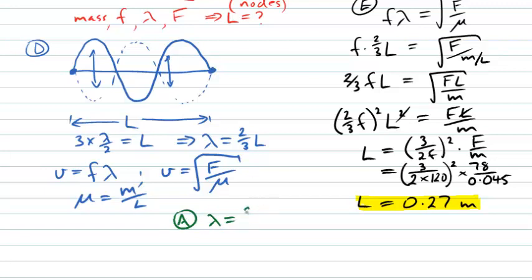It's simply going to be two thirds times the length that we've calculated, 0.27. That tells us we have a wavelength of 0.18 meters. And that allows us to calculate, using one method, our speed being frequency times wavelength. And again we know our frequency is 120 hertz times the wavelength that we just calculated using the length of the string. And that comes out to be about 22 meters per second.